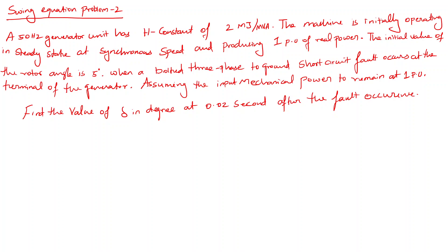This problem is very similar to the last problem. Here, all the values are given in per unit, whereas the last problem used actual values. From the problem, we have the inertia constant H equal to 2 MJ per MVA. The machine is at steady state before the fault occurs, maintaining synchronized speed and producing 1 per unit of real power. The initial rotor angle delta naught, which is the angle between the rotor and stator, is 5 degrees.